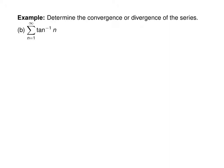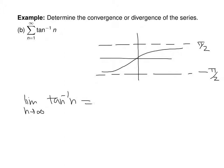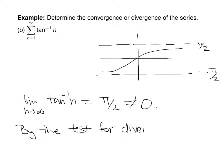Next, we have the sum from n equals 1 to infinity of arctan. Recall that the graph of arctan has horizontal asymptotes at pi halves and negative pi halves. So the limit as n goes to infinity of arctan(n) equals positive pi halves, which is not 0. By the test for divergence, this series diverges.